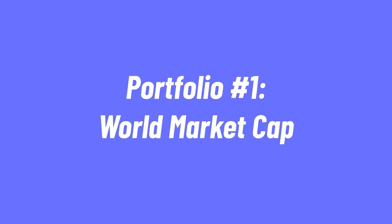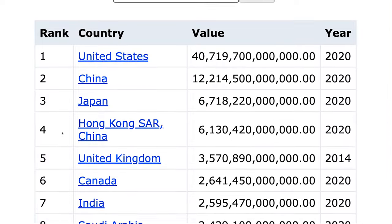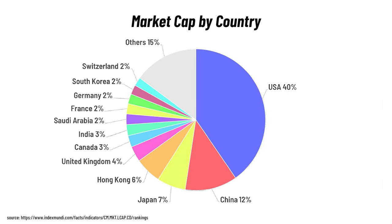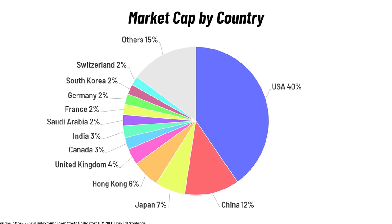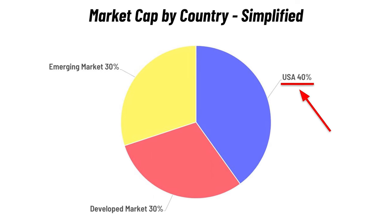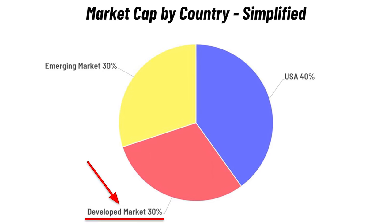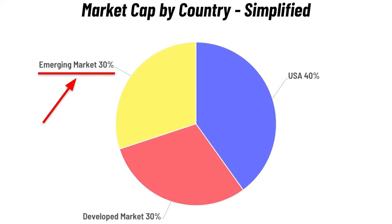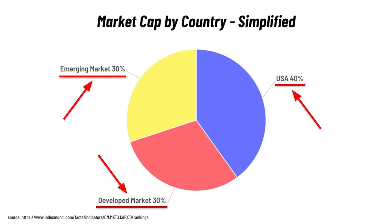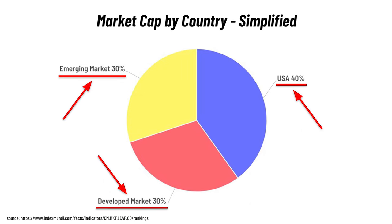Let's start with ETF portfolio number one: the world market cap portfolio. This one invests globally and weighs the country exposure by the size of their stock market. Breaking it down into US, developed, and emerging markets, you end up with an allocation where around 40% of the global market cap is in the US, 30% in other developed countries, and 30% in emerging markets. You can quite easily build this portfolio yourself — all you need is three ETFs: one for the US, one for developed markets, and one for emerging markets.